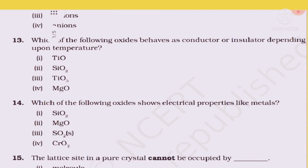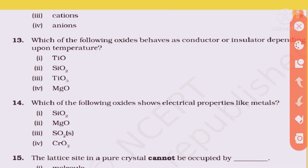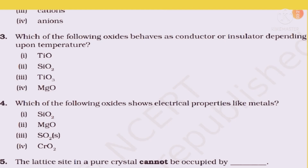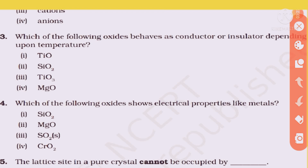Question 14: Which of the following oxide shows electrical properties like metals? Which oxide has properties similar to metals? The answer is option 4: CrO2. This is an important question to remember — CrO2 shows metal-like electrical properties.